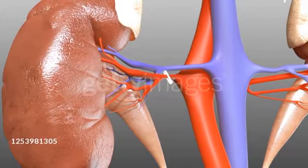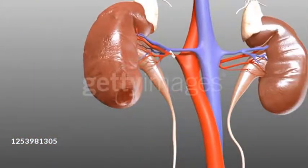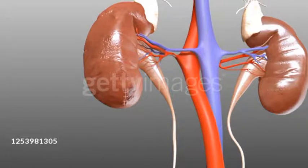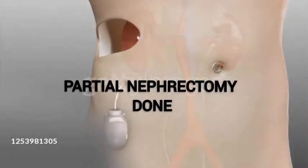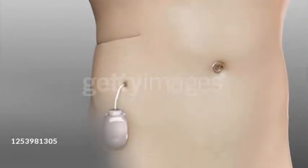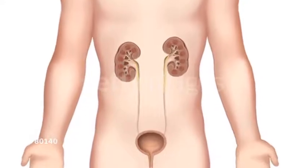During partial nephrectomy, the surgeon removes the tumor and spares the remainder of the kidney — only the defective part of the kidney is removed. After partial nephrectomy, you may have overall normal kidney function. To preserve normal kidney function, your doctor may recommend that you eat a healthy diet so that your kidney performs its functions normally.